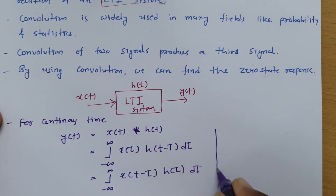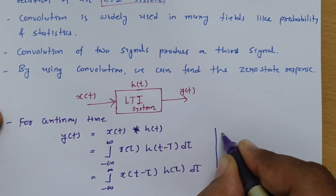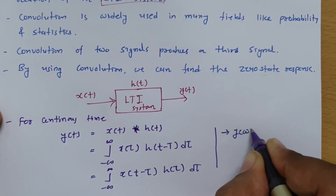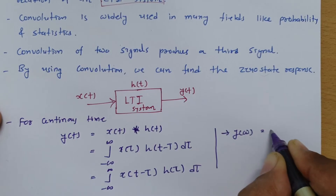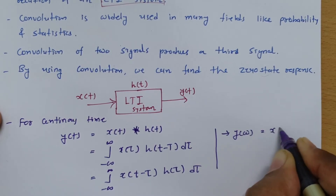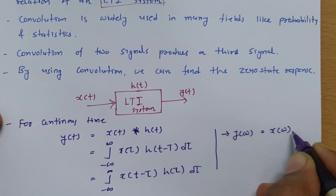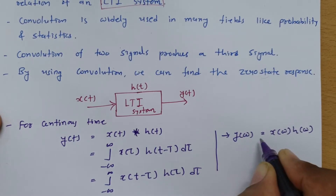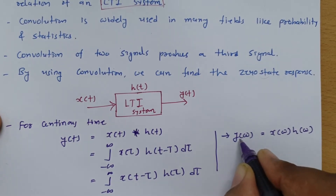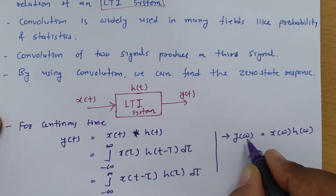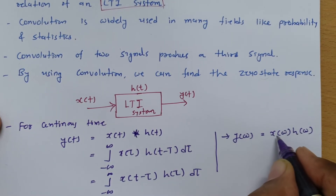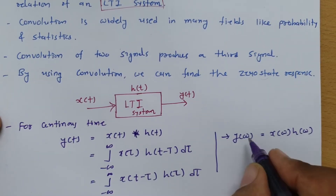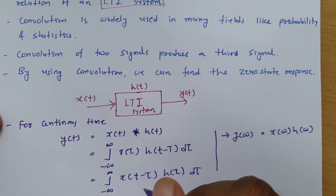One more thing to observe: in the frequency domain, if you have Y(f) or Y(ω), it is the multiplication of the two signals in the frequency domain. So the output response in the frequency domain is Y(ω) = X(ω) · H(ω). That is the convolution relation in the frequency domain.